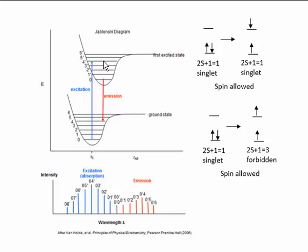So what happens then? The electron relaxes in a radiationless process to lower vibrational states, but still within the excited state of the molecule. Then it can fall from the lowest vibrational state of the excited state to various vibrational states within the ground state. So the energy of the photon that excited the molecule is much greater than the energy of the emitted photon, as it relaxes from the excited state to some vibrational level within the ground state.